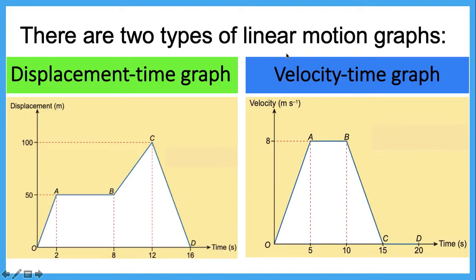There are two types of Linear Motion Graph: the Displacement Against Times Graph, and the Velocity Against Times Graph. In this lesson, we will focus more on the Displacement Against Times Graph. And in the next lesson, you will learn about the Velocity Against Times Graph.